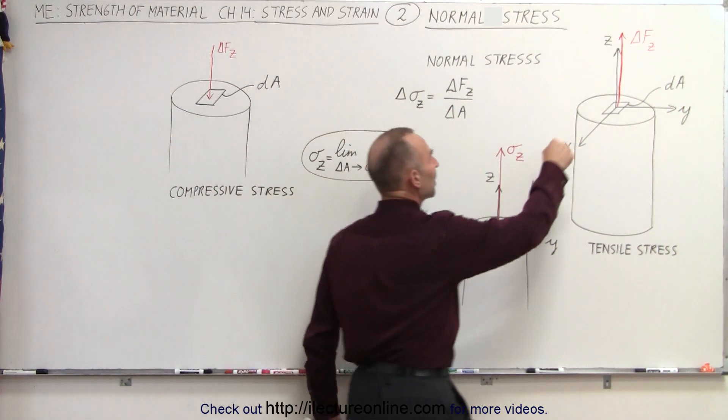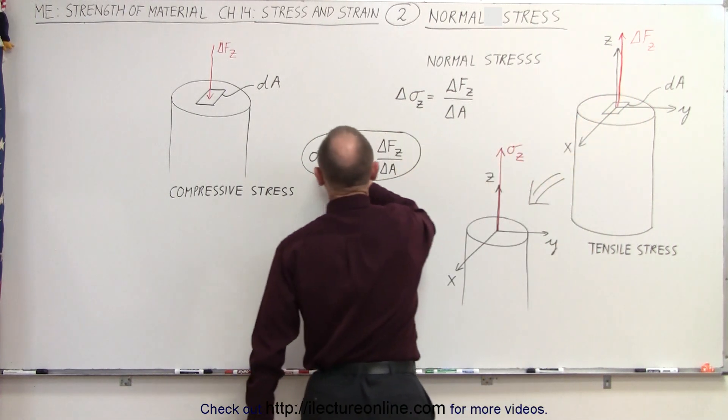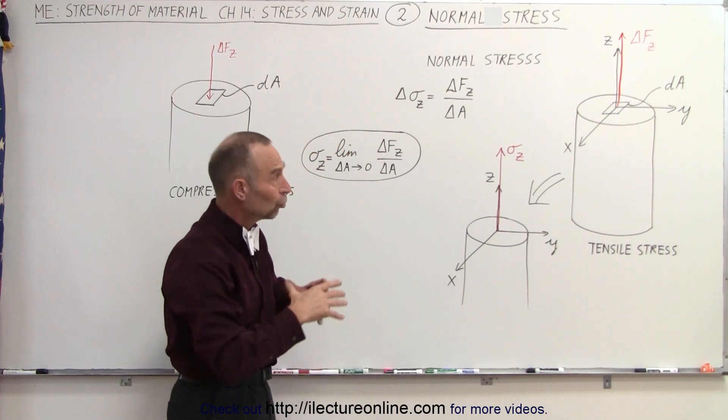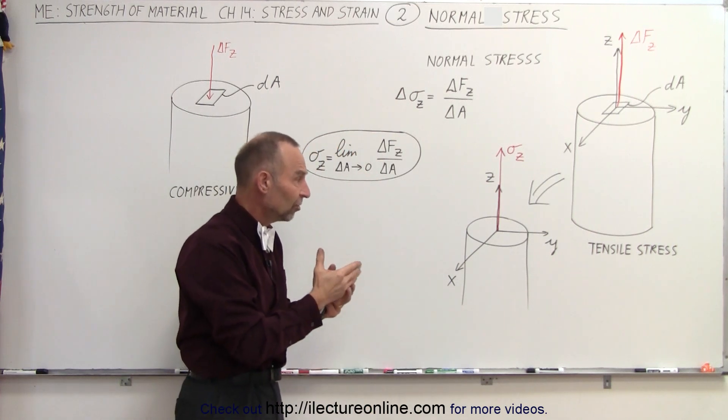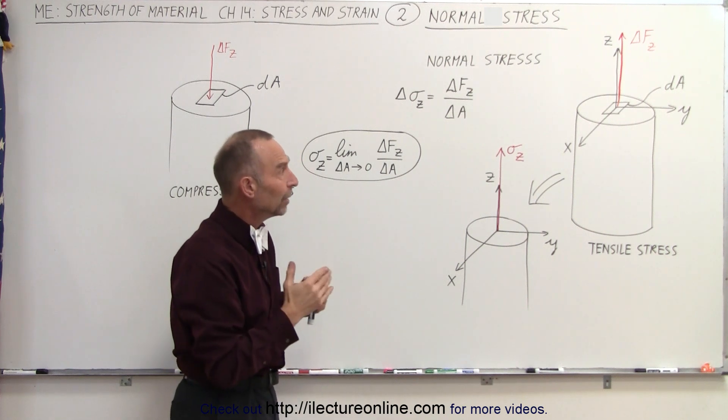So that means we can then pick any point along that cross-section and calculate the normal stress. Now if the material is uniform in consistency, in makeup, and it's uniform in strength throughout, then we can say that normal stress will be constant anywhere inside the material.